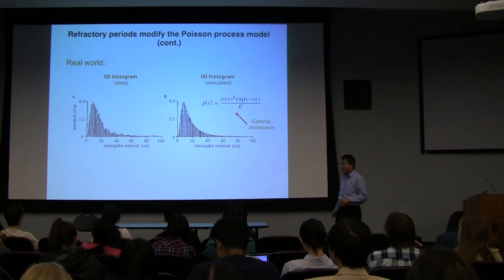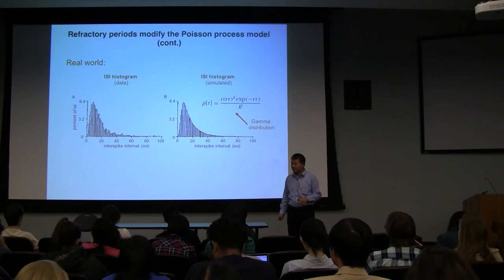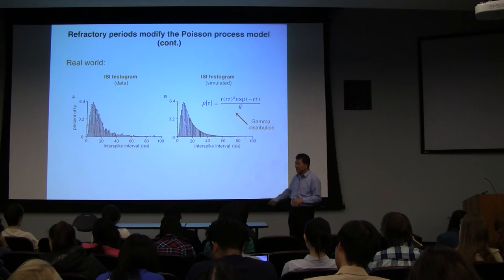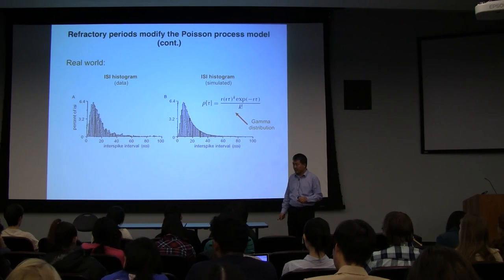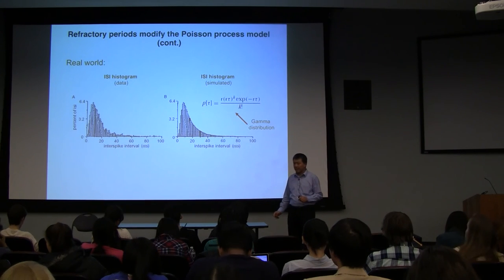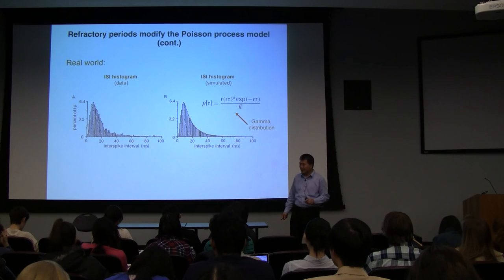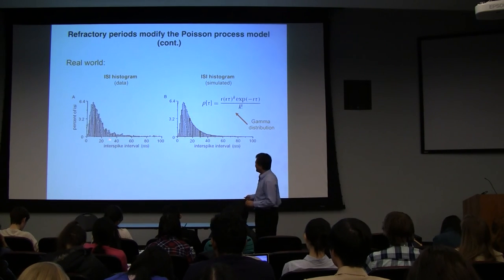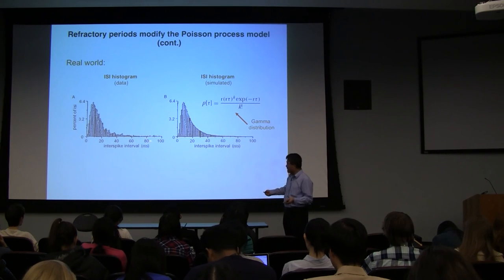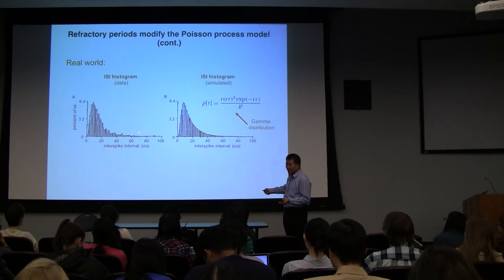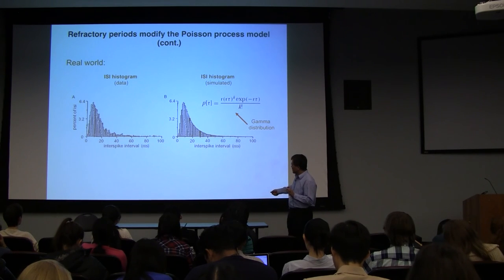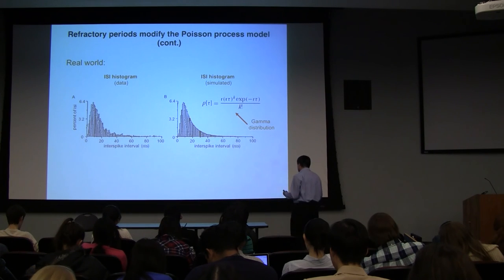Does this neuron have phase locking? If this is an interspike interval histogram for the neuron, can you tell if there is phase locking? It could — but if there were phase locking you'd need to see a peak. For example, if the neuron is phase-locked to a 100 ms period, you'd have a peak at 80 ms or 100 ms. But you could have phase locking embedded in this histogram and not be able to see it clearly. We could not tell from this alone.